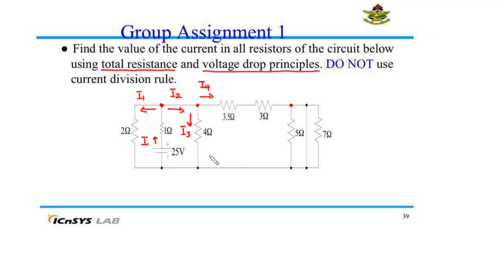On reaching this junction, ideally the current is supposed to split. However, we have a short circuit connected here. This short circuit literally has no resistance. So when I4 reaches this junction, instead of splitting between the 5 ohm resistor, the short circuit, and the 7 ohm resistor, the current would like to flow through the short circuit — neglecting both the 5 ohm and the 7 ohm resistors. The current always flows in the lowest resistance path.